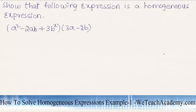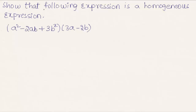Welcome to vteachacademy.com. In this presentation we are going to solve an example on homogeneous expressions. We need to show that the following expression is a homogeneous expression: (a squared minus 2ab plus 3b squared) into (3a minus 2b).